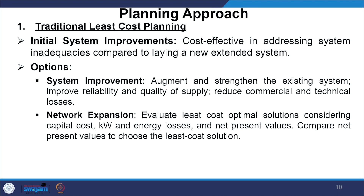Initial system improvements are more cost effective in addressing system inadequacies compared to laying a new extended system. Multiple options are available: system improvement means augmenting and strengthening the existing system, improving reliability and quality of supply, and reducing commercial and technical losses. In case of network expansion, evaluate least cost optimal solutions considering capital cost, kilowatt and energy losses, and compare net present values to choose the least cost solution.